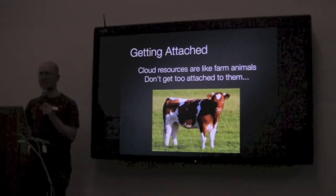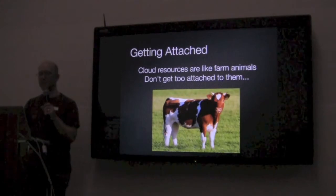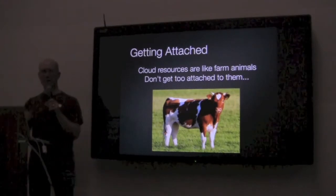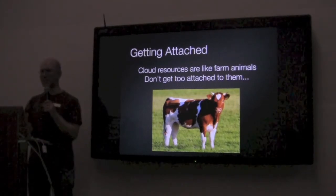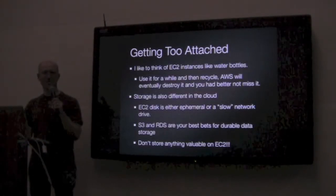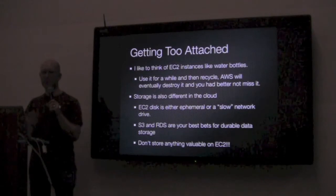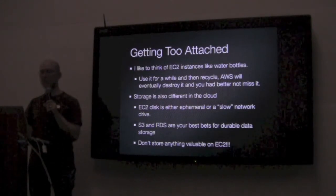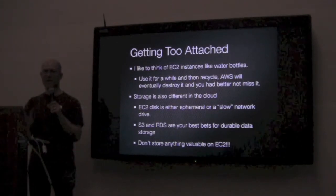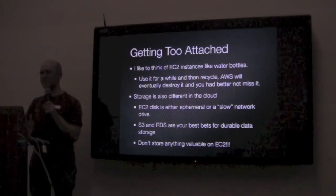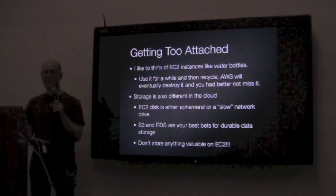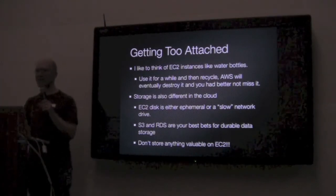Now some common cloud pitfalls. The first is getting too attached. Cloud resources can just go away — they're like farm animals, you don't want to name them. I like to think of EC2 instances like water bottles: you use it, recycle it when you're done. At some point Amazon is just going to take it back, and if there was something on it you're kind of out of luck unless you've got it backed up.